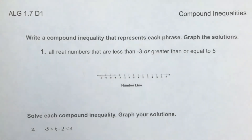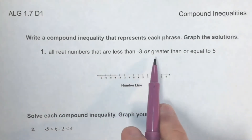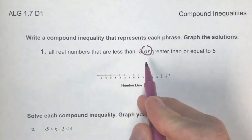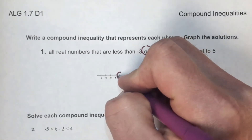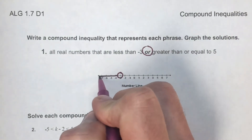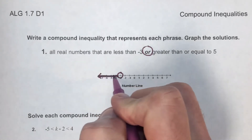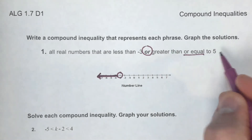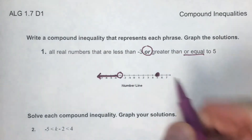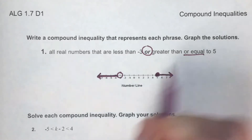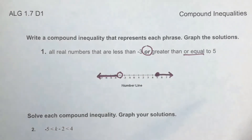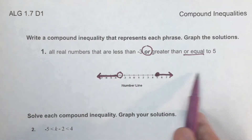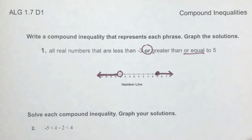Practice: graph all real numbers less than negative three OR greater than or equal to five. OR is the key — less than negative three means open circle on negative three, shade left. Greater than or equal to five means closed circle on five, shade right. Only one condition needs to be true, so all numbers less than negative three or greater than or equal to five are in the solution set.